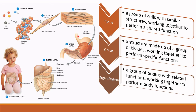Now let's look at the levels of organization. Chemicals like atoms and molecules join to form a cellular level — the cell, which is the structural, functional, and biological unit of all living organisms. A group of cells working together with a shared function is called a tissue. When a group of tissues work together to perform a specific function, we call it an organ. For example, smooth muscle tissue and epithelial tissue come together to form an organ.